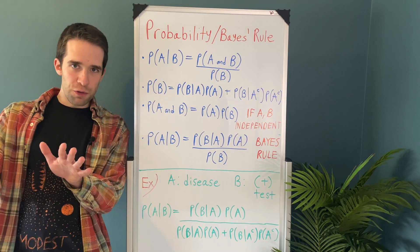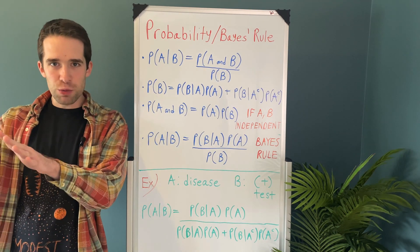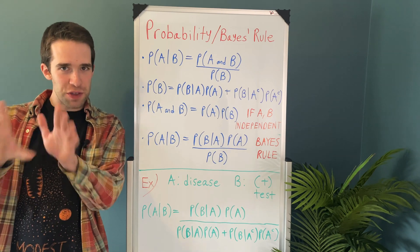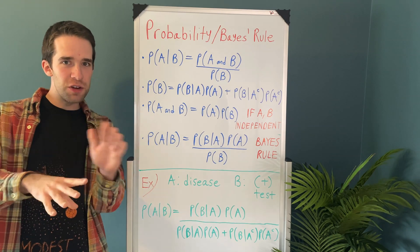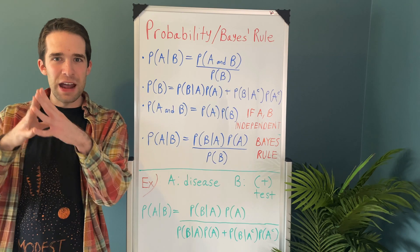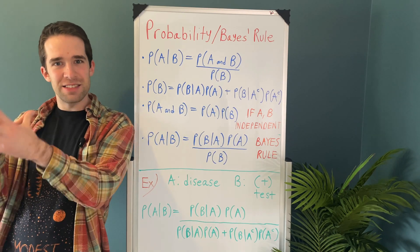That's all wonderful and everything, but I think the power of Bayes' rule is best demonstrated with an example. So let's suppose there's some disease out there, and 2% of the country has that disease.